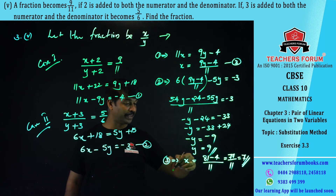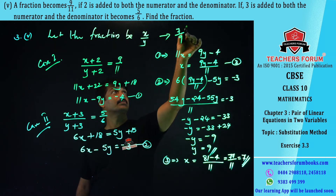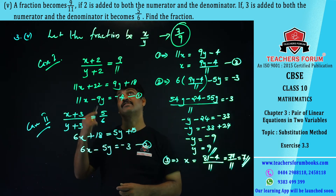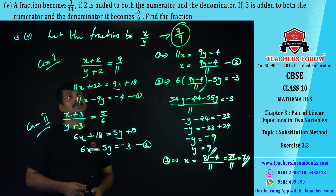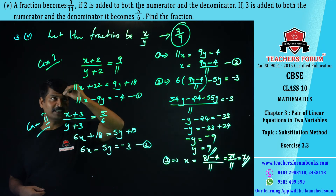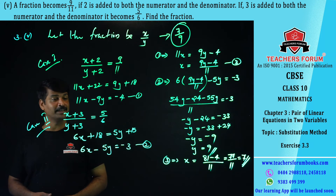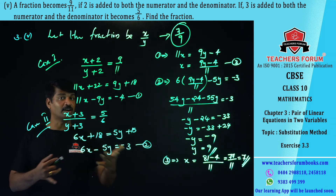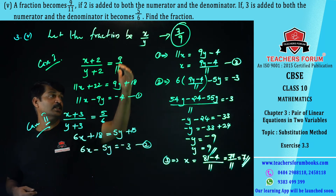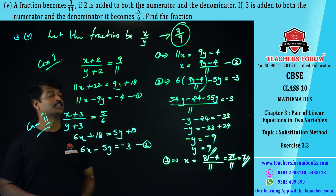The value of x is 7 and y is 9, so the fraction is 7/9. To summarize: we took the fraction as x/y, formed two linear equations from the two conditions, used substitution to find y = 9 and x = 7, giving the fraction as 7/9.